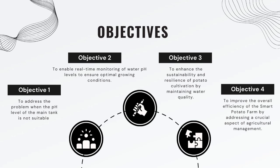The objectives are: first, to address the problem when the pH level of the main tank is not suitable. Second, to enable real-time monitoring of water pH levels to ensure optimal growing conditions. Third, to enhance the sustainability and resilience of potato cultivation by maintaining water quality.